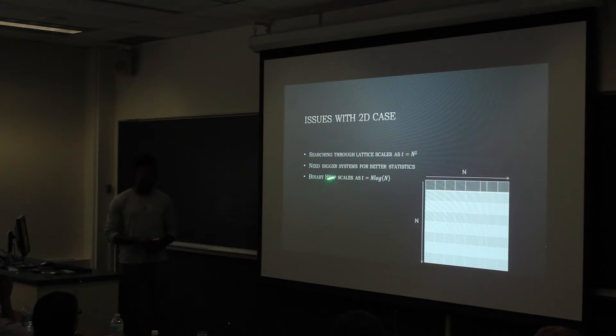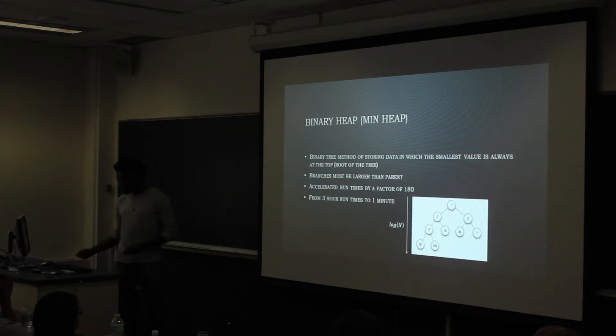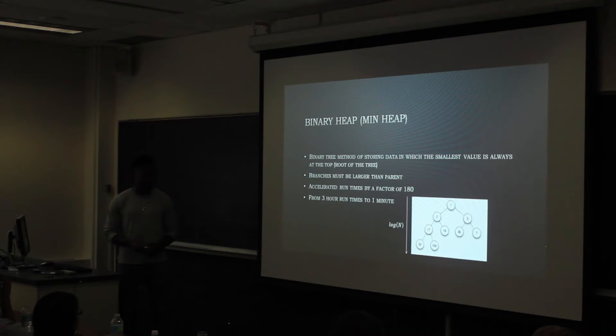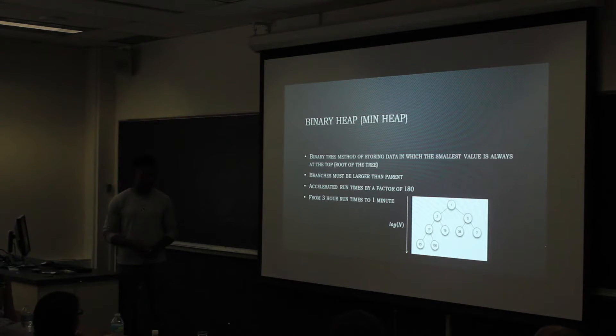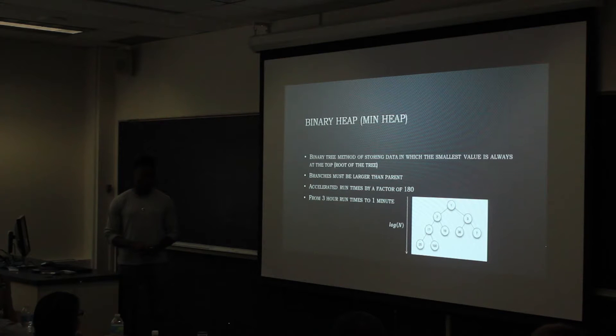So we introduced something called the binary heap. And it is a binary tree way of keeping the data. Specifically we used the min heap. And so it specifically keeps the root or the very top value of the tree to be the lowest value. And it makes sure that the children and leaves of these trees are always less than its parent. And so that gave us a factor of about 180. For example, I ran one of my systems that was a million sites. Just the initial run to test the heap, the speed. And it went from three hours to one minute. So it really gave us a lot of time on these runs.